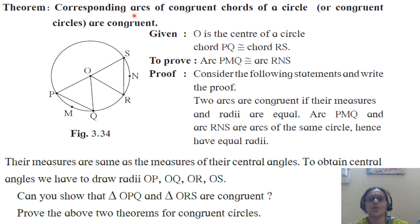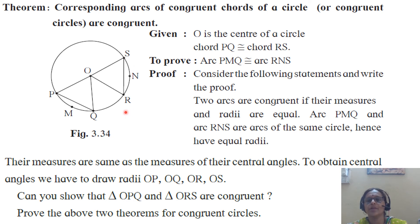Study the next theorem: Corresponding arcs of congruent chords of a circle are congruent. Circle with center O. Chord PQ is congruent to chord RS — this is given. You have to prove arc PMQ is congruent to arc RNS. Two arcs are congruent if their measures and radii are equal. Arc PMQ and arc RNS are arcs of the same circle and hence they have equal radii. With the help of this, you are supposed to write the proof.